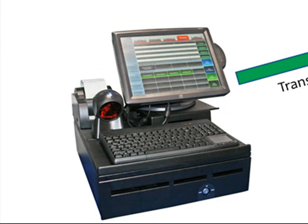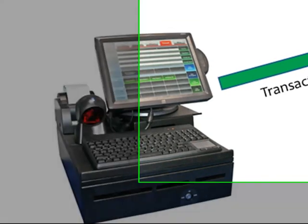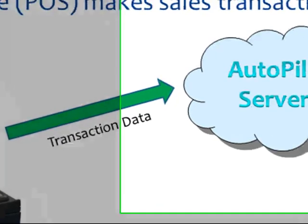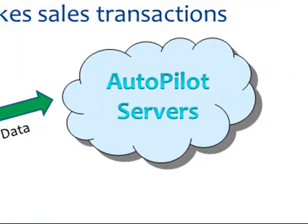Payment could be cash, or credit card. Every sales transaction has data. That transaction data is then automatically uploaded through the internet to the Autopilot centralized servers. All transaction data is then stored on the servers.